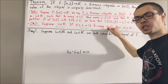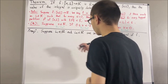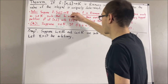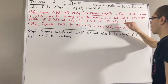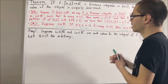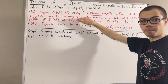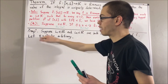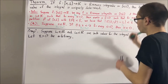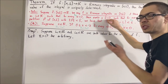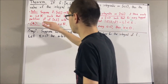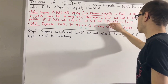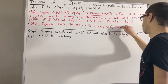Let ε > 0 be arbitrary. Since L1 is a value for the integral of f, the definition holds with L replaced by L1. In particular, it must work for ε/2, so there exists a positive real number δ1 such that for every tagged partition P of [a, b] whose norm is less than δ1, we have that |S(f, P) − L1| < ε/2.